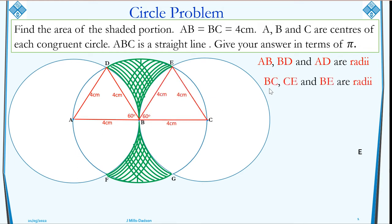BC, CE and BE are radii as well, making this an equilateral triangle. Therefore, this corner is 60 degrees.